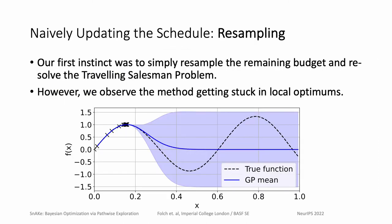The next question becomes how to update the path once we begin to receive experimental results. The most naive way of doing this is by creating a new batch of points using the updated Gaussian process posterior, and then resolving the traveling salesman problem. However, we found that this leads to the method getting stuck in local optima. The reason why this happens is because every time we resample, we are reintroducing exploitative points, and these exploitative points are always chosen for early evaluation by the traveling salesman problem.